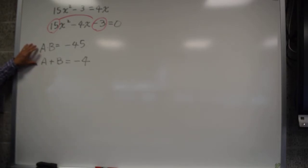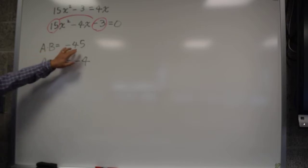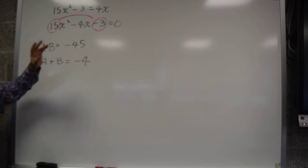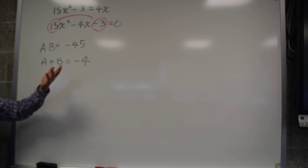So here we have two numbers, a times b. That gives you negative 45. So you can think of all the factors of 45, like 9 and 5, or 15 and 3. 15 times 3 is 45.